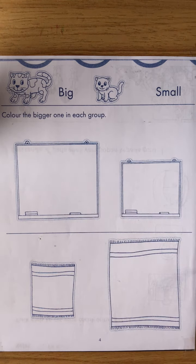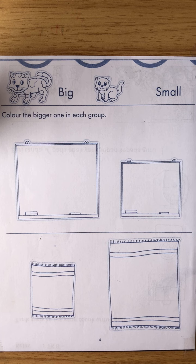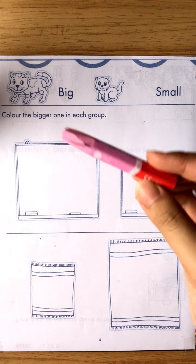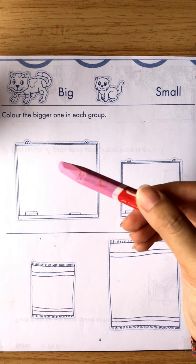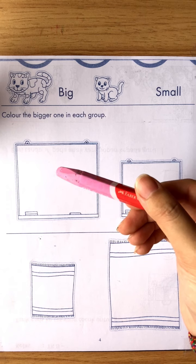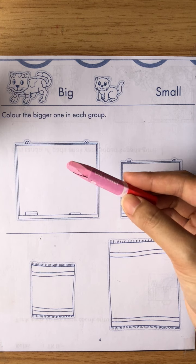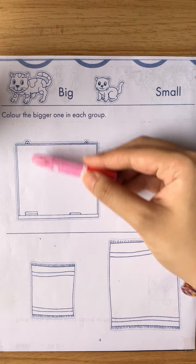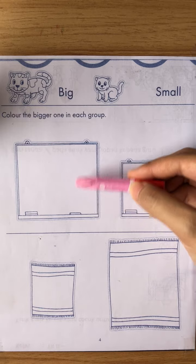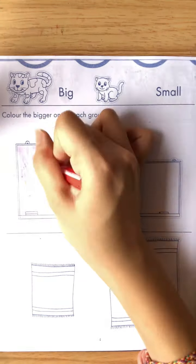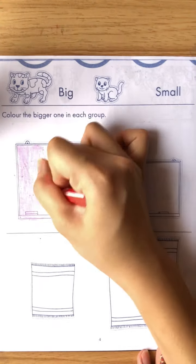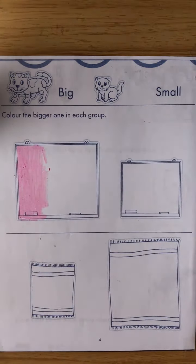Now teacher wants you to take out your pink color. Let us use pink color. We are going to color the big whiteboard. Let's color.